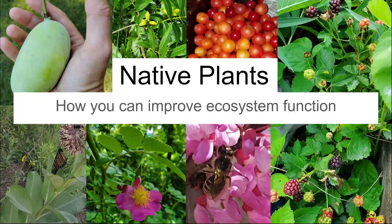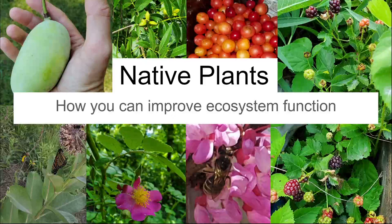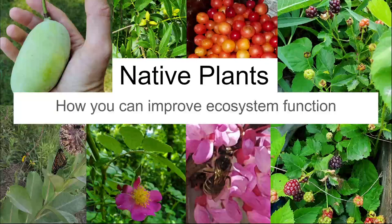This is going to be focused on Missouri because that's kind of where I live, although I've lived in a few other midwestern states. This kind of applies to a lot of the eastern United States, and globally there are some things that will still apply pretty much anywhere. So I'll go ahead and get started — this is native plants: how you can improve ecosystem function.